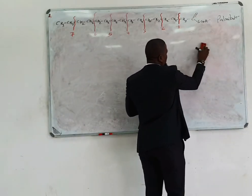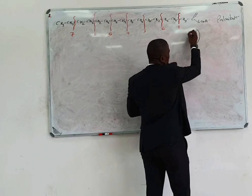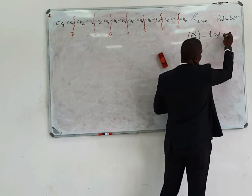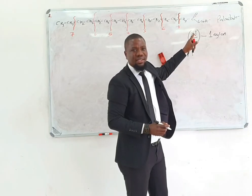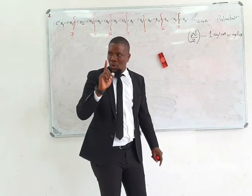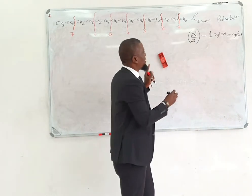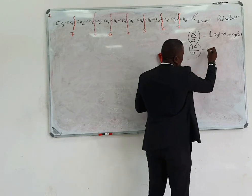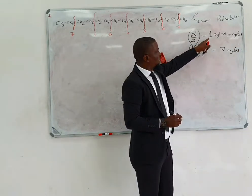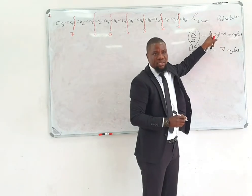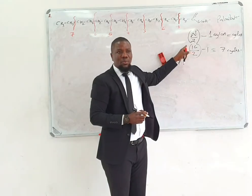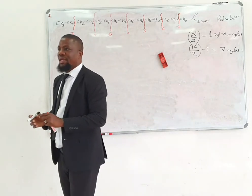There is a formula to calculate how many cycles: number of carbons divided by 2, minus 1, equals the number of cycles. So for palmitoyl-CoA with 16 carbons: 16 divided by 2 is 8, minus 1 equals 7 cycles. If it were 18 carbons: 18 divided by 2 is 9, minus 1 equals 8 cycles.